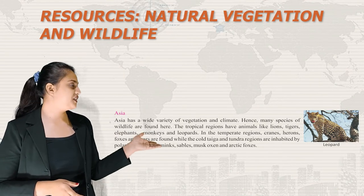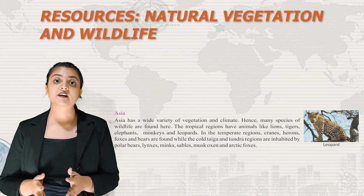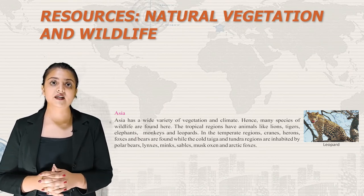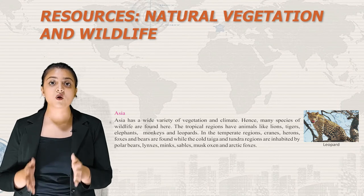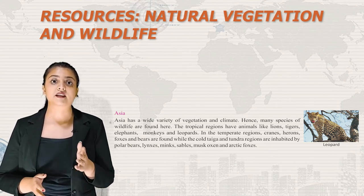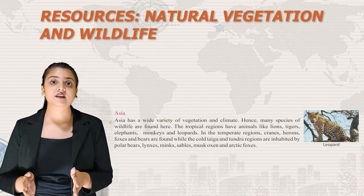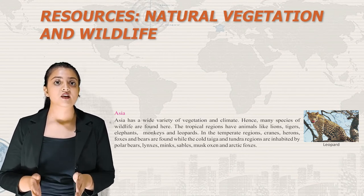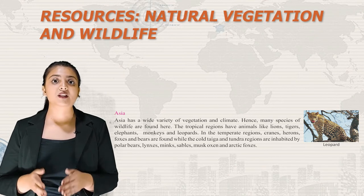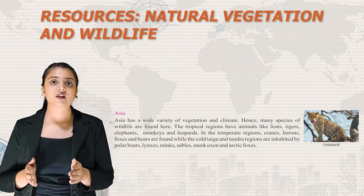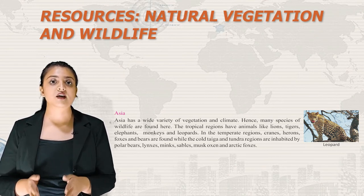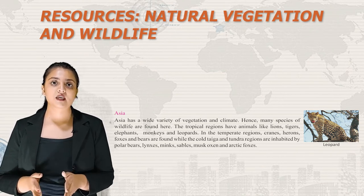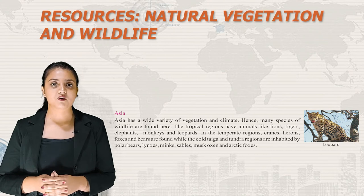Asia has a wide variety of vegetation and climate, and hence many species of wildlife are found. The tropical regions have lions, tigers, elephants, monkeys and leopards. In the temperate region, cranes, herons, foxes and bears are found. The cold taiga and tundra regions are inhabited by polar bears, lynxes, minks, sable, musk oxen and arctic foxes.